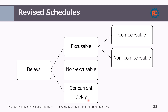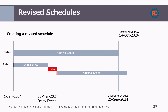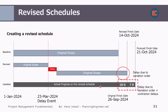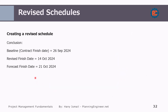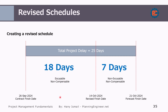In our scenario, a delay event happened, causing a delay. The contractor has a new revised completion date. These are the delays due to the variation order. However, the actual progress shows there are an additional seven days of delays because of the contractor. The conclusion is: the baseline finish is 26th September, the revised finish date is 14th October, and the forecast finish date after the update is 21st October. We have 25 days of delays total, segregated into two sections: 18 days are excusable non-compensable, and seven days are non-excusable non-compensable.